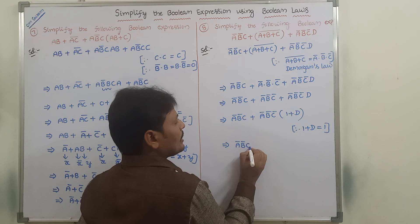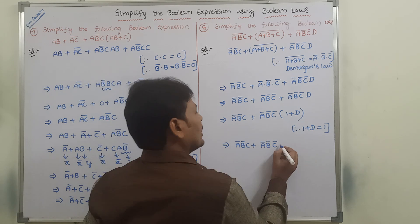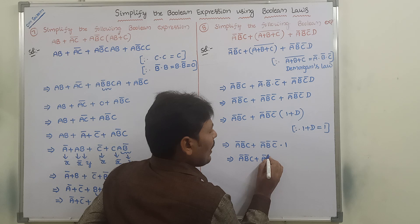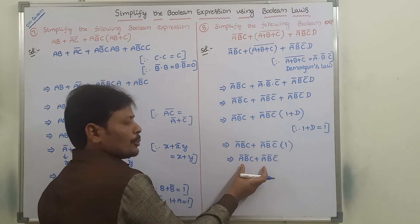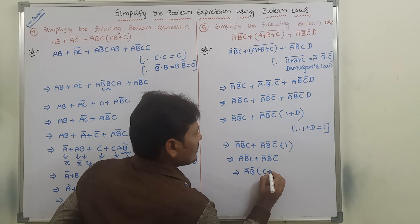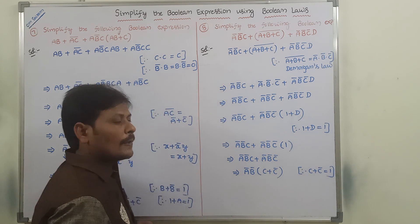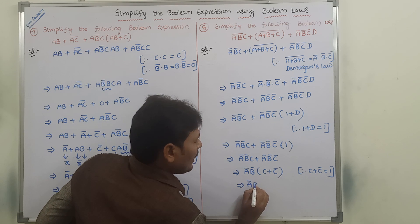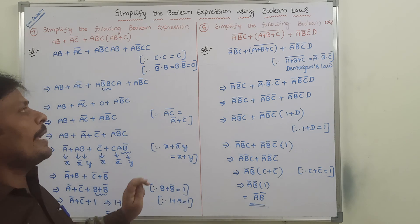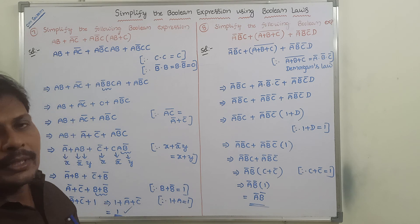So we now have Ā·B̄·C plus Ā·B̄·C̄. From these two terms we factor out Ā·B̄, giving us Ā·B̄·(C + C̄). We already know that C + C̄ equals one. Substituting: Ā·B̄·one equals Ā·B̄. So the final simplified answer is Ā·B̄.